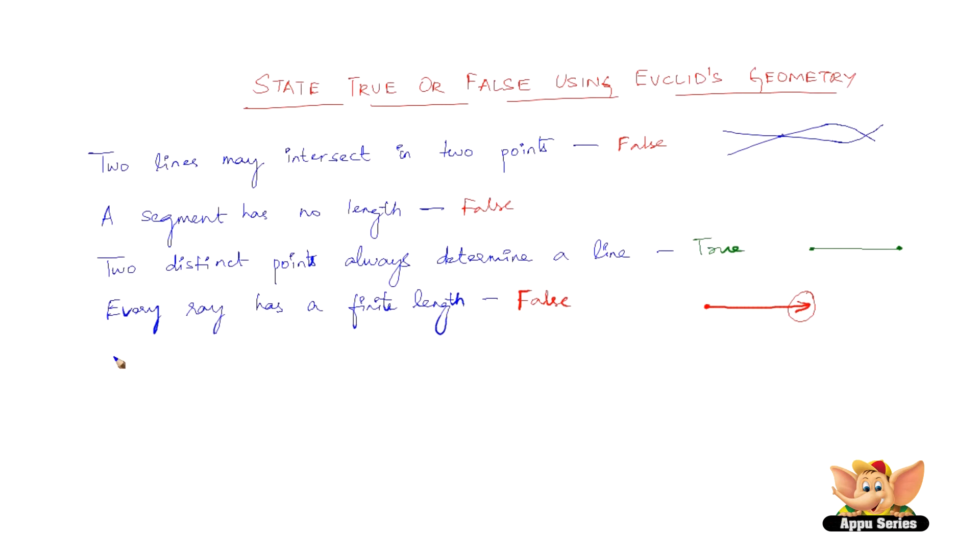Let us see another statement. A ray has one endpoint only. What do you think about this? So it is definitely true. Yes, it has only one endpoint and this end, this side, it just goes on, doesn't stop. It is infinite.